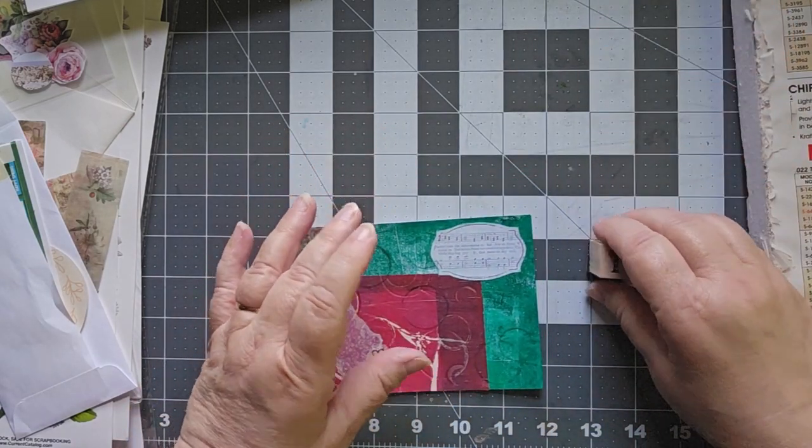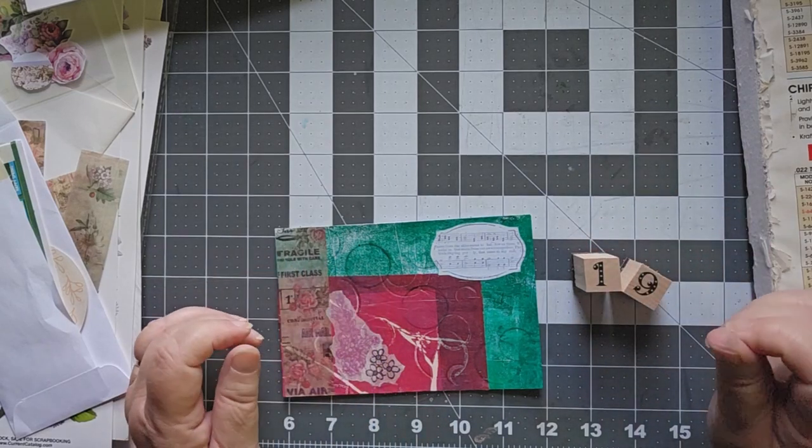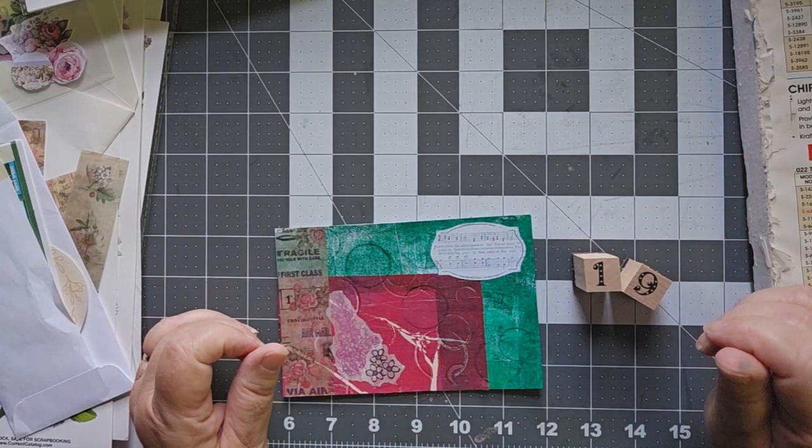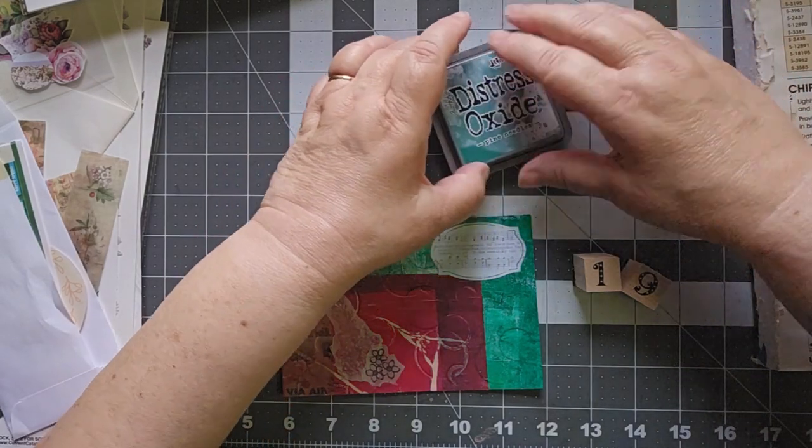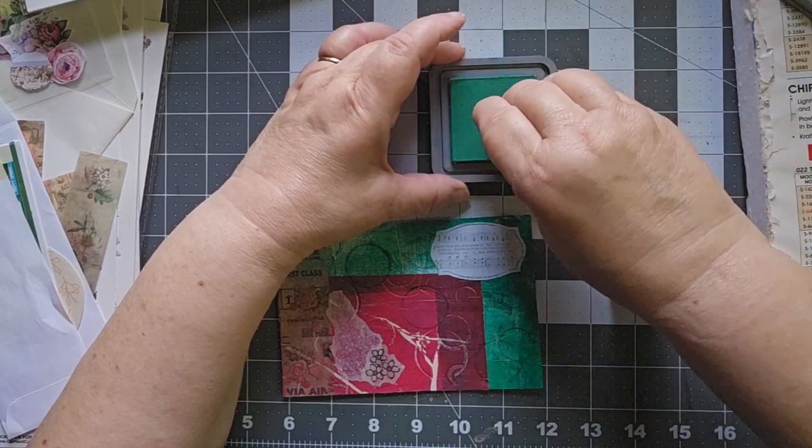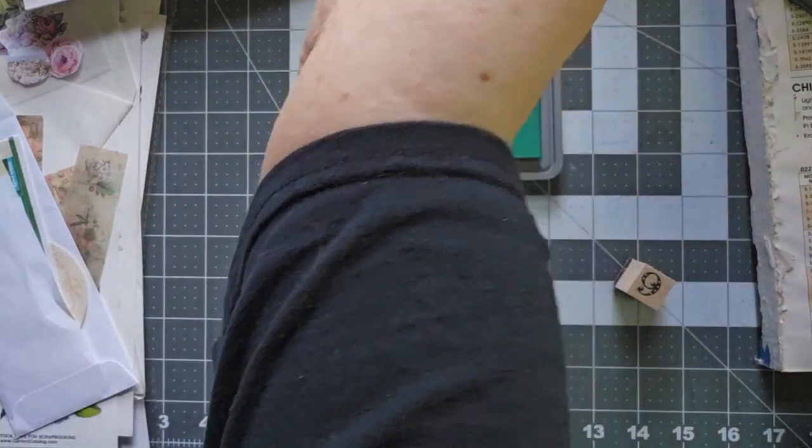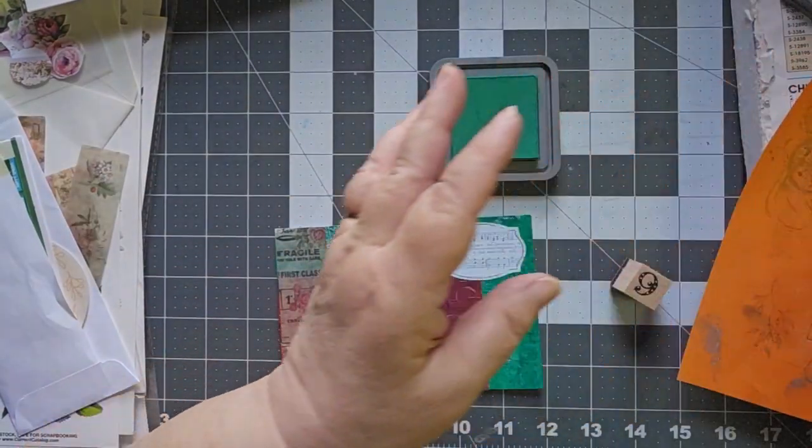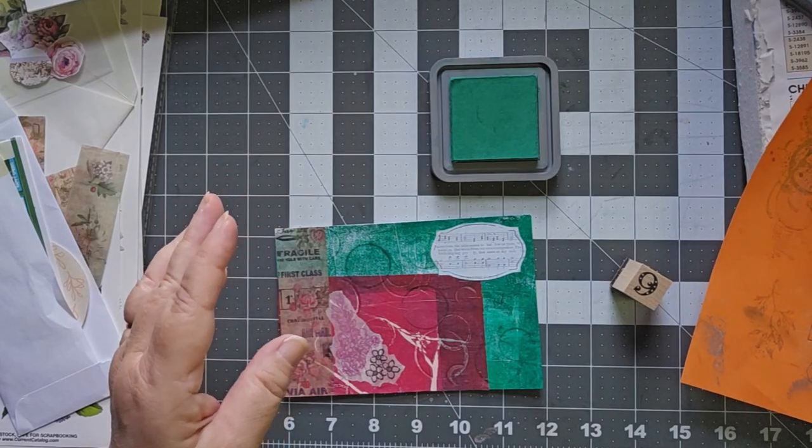And then my whimsical 19 that I think I want to do in pine needles. I've been using that pine needles a lot lately. Let's see how this looks before I stamp it on there. Let me see what it looks like. Okay, I like it.